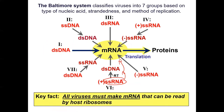The key point here, which I emphasized last time, is that viruses' whole goal is to deliver the genetic material to the host, and the host is going to use its enzymes to read that genetic material and make viral parts - new viral genomes and new viral proteins. That's how viruses get made.